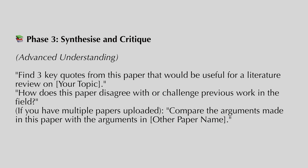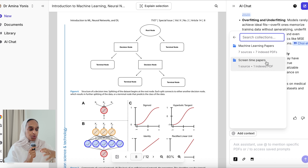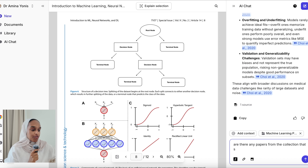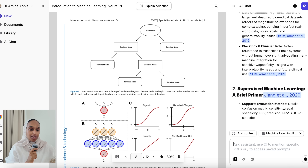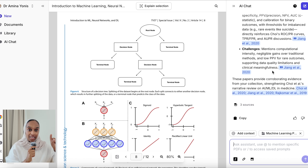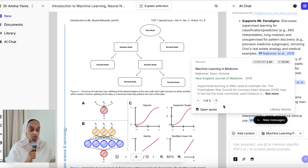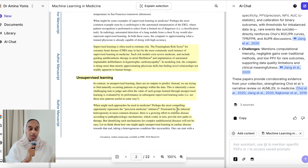Phase three is about synthesizing and critiquing the text for a much deeper and richer understanding. When reading a research paper, skimming isn't enough — you need to understand the critical discussions and how the paper relates to others. A really useful feature in Jenny is asking questions about entire collections. I set the machine learning papers collection as my context and asked: are there any papers from this collection that support the arguments made in this paper? It identified supporting papers with references and let me click through to the relevant sections.